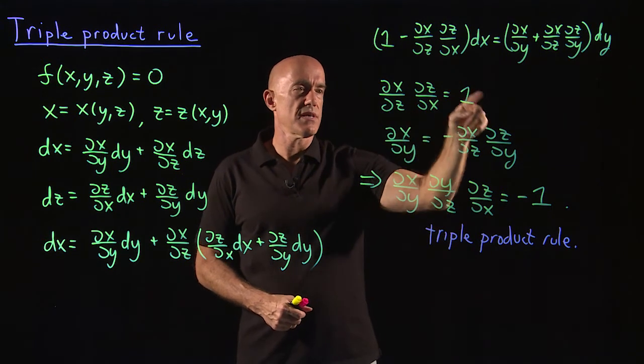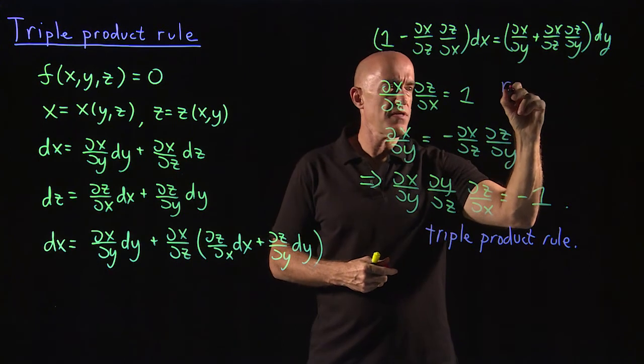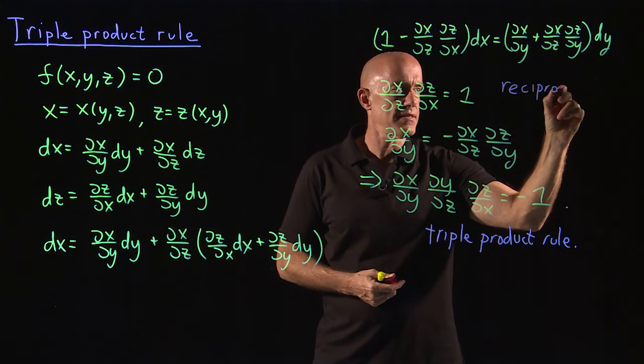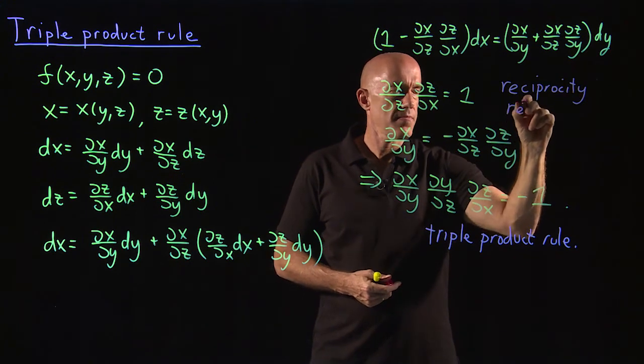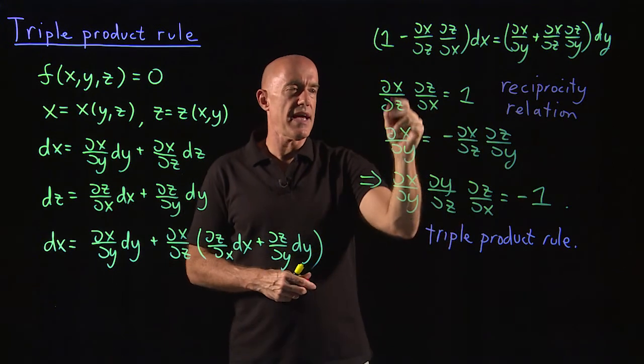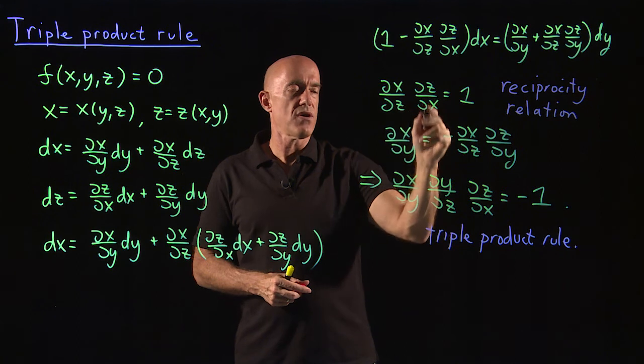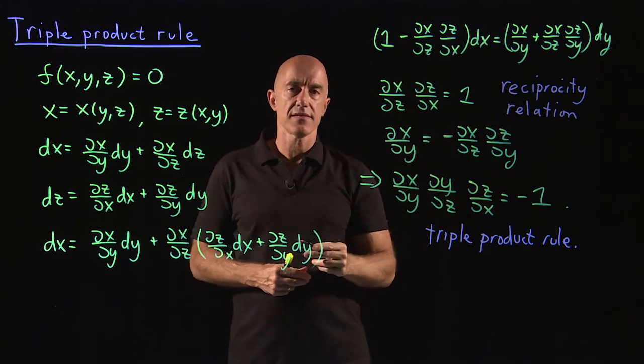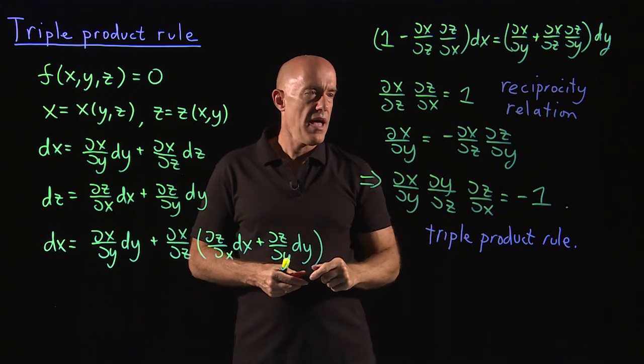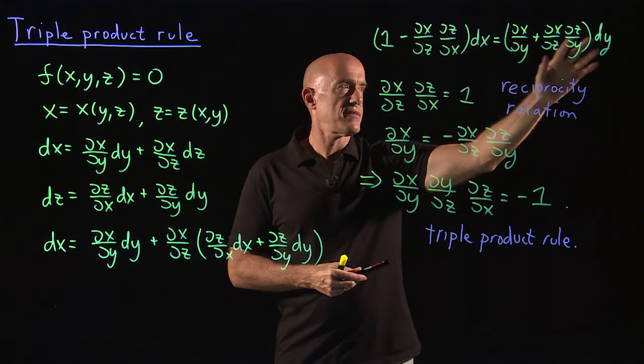Since x and y can be varied independently, these terms in the parentheses must be identically zero. The first one gives us the reciprocity relationship. So reciprocity relation.